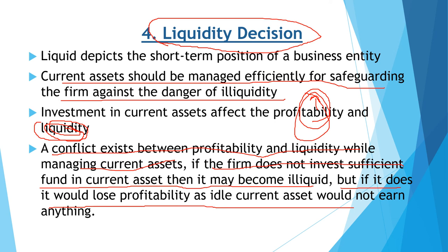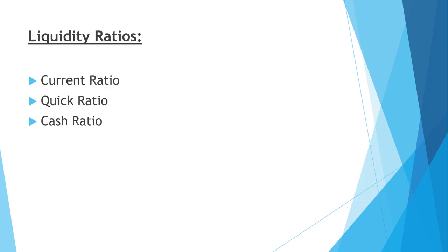Conversely, if the finance manager invests too much in current assets, profitability will decrease because there is idle money — cash that is not being put to productive use. Had that money been invested in long-term assets, it would generate a higher rate of profitability. The finance manager must balance both sides, and for this uses liquidity ratios: current ratio, quick ratio, and cash ratio, which will be studied in other lectures.